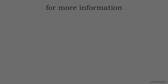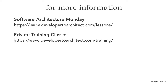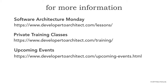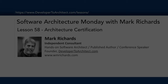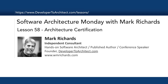For more information, you can go to Software Architecture Monday where all these lessons are housed. I offer three different private training classes: a three-day Software Architecture Fundamentals, a one-day microservices class, and a one-day analyzing software architecture class. You can visit the training portion of my website for more information. I also speak at conferences and some classes are publicly available — visit the Upcoming Events portion of my website to find out where I'm speaking next. This has been Software Architecture Monday, lesson 58: Architecture Certification. Stay tuned next Monday for another lesson. Thank you so much.